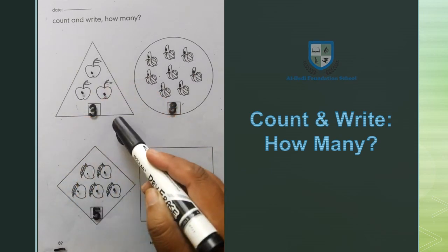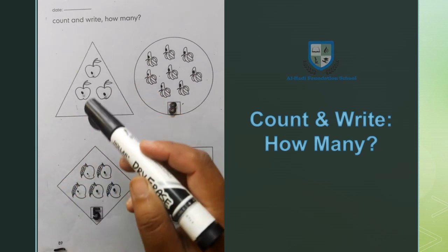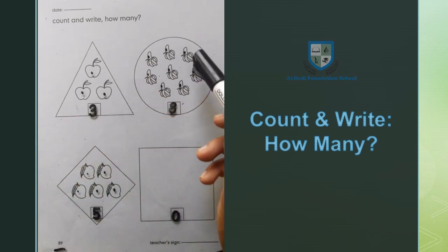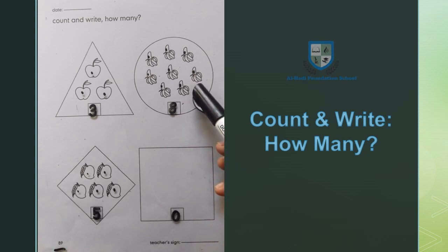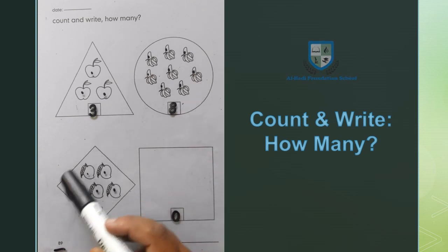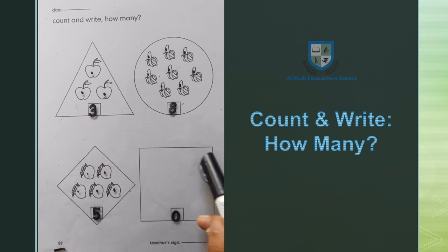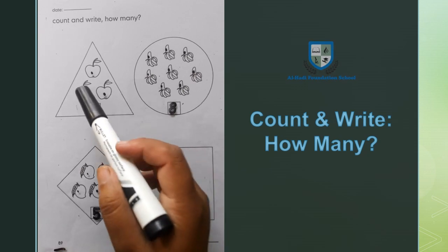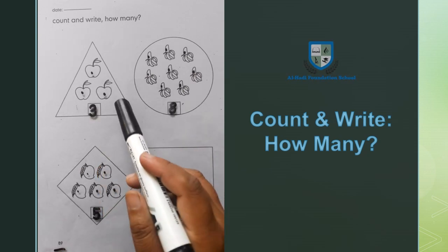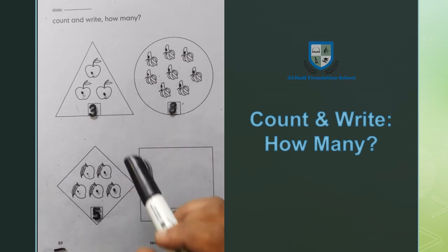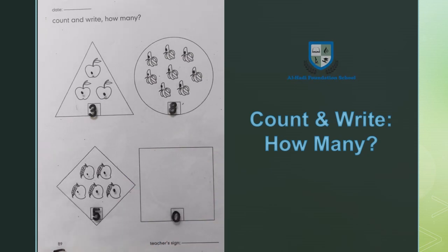First shape: three apples. Second shape: eight bananas. Third shape: five mangoes. Last shape is square: we will write zero. First we will count them in the block and then color. We will complete page 89.